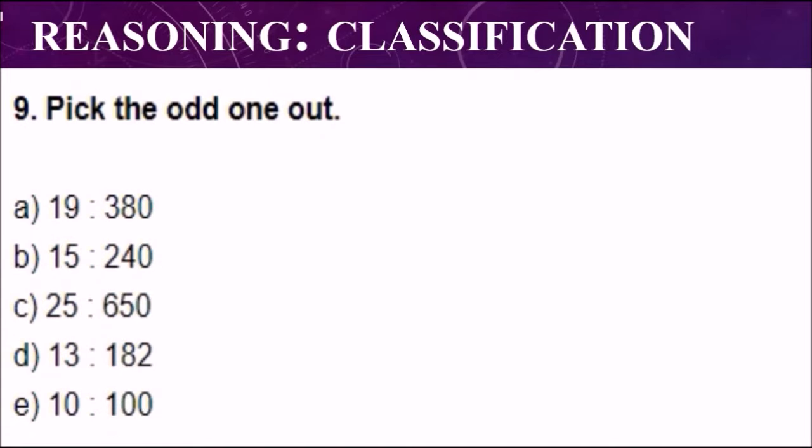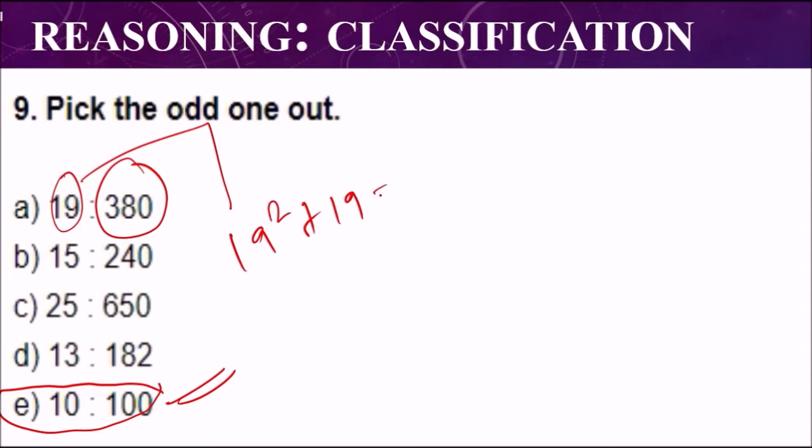This is question number nine. The correct answer is option number E, 10 to 200, because here the second number is the result of square and addition, then addition of the first number, this first number except for option E. You can check all those A, B, C, and D options.